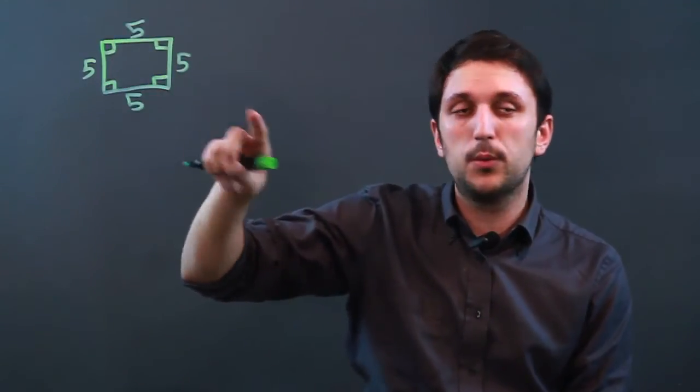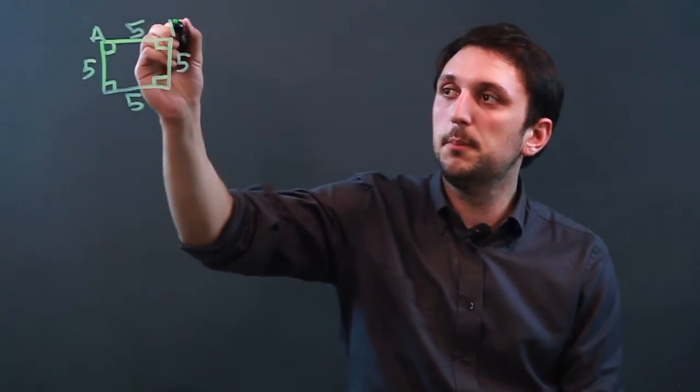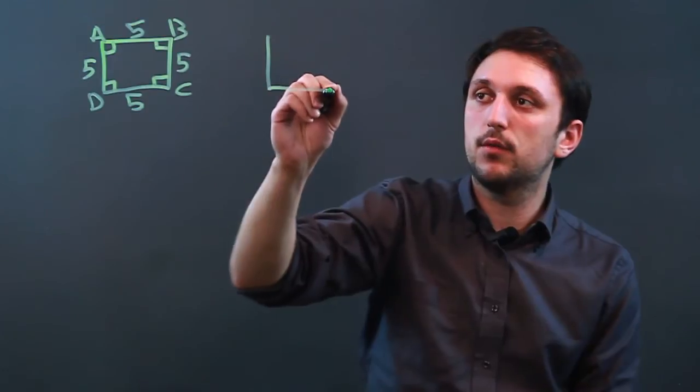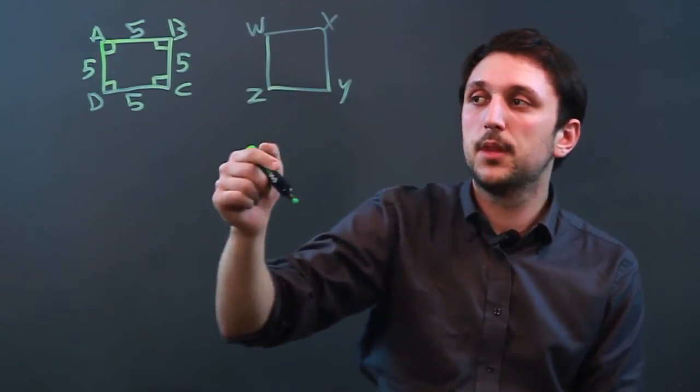Well, a congruent square would be a square that is exactly equal to it, so we call this square ABCD, and if we also have over here square WXYZ,